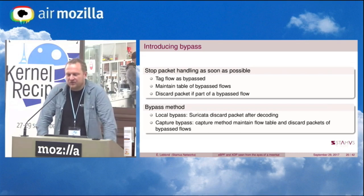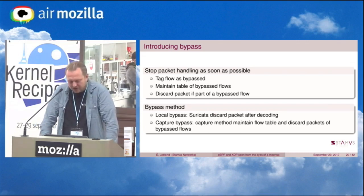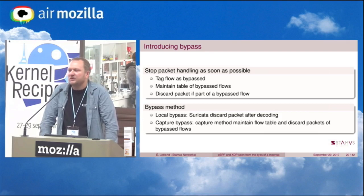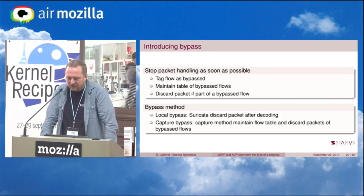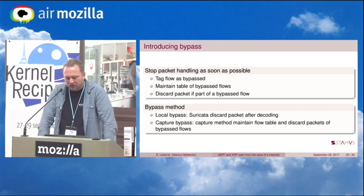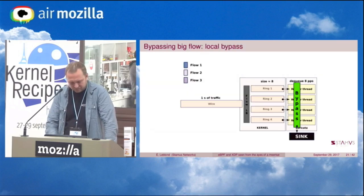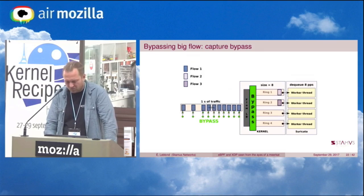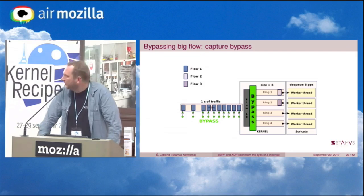There is also a second method I've developed called the capture bypass. In this case, you tell the capture method that you don't want to see this flow anymore — you take that decision, send it to the capture method, and it handles the bypass itself. This is the soft bypass. If we do the bypass in the kernel, we just drop the packet, managing to reduce the load on the system.